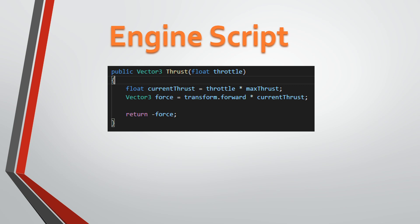The engine script is actually really simple. You can just create a new script and it's going to be a MonoBehaviour. You're just going to have a public Vector3 thrust, and all we're going to take for that is a float. We're going to call this thrust function and give it a throttle value. There's also a max thrust, which is just a public float — we can set it to 5,000 or 3,000, but in the examples I have them all at 5,000. We're going to say float currentThrust equals throttle times maxThrust, then return a Vector3 force: transform.forward times currentThrust.